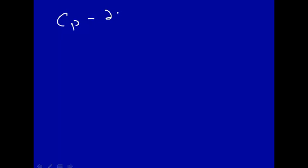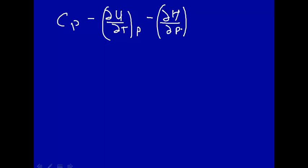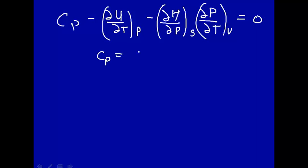Here's the equation we want to show is correct: Cp minus how U changes with temperature at constant pressure, minus how H changes with pressure at constant entropy, times how P changes with temperature at constant volume — we want to show that equals zero. Remember that Cp is how H changes with temperature at constant pressure. That's our definition of Cp.